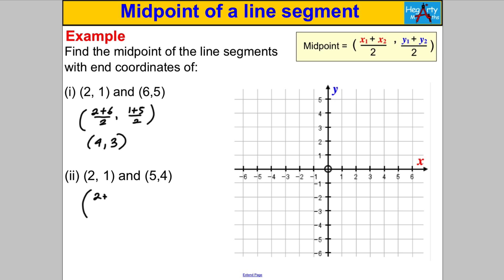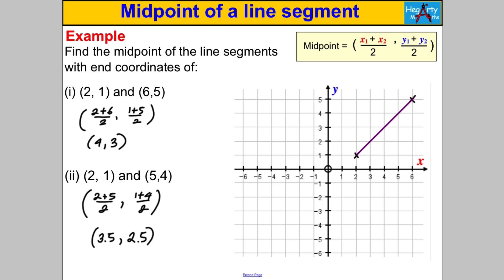What about the midpoint of (2, 1) and (5, 4)? Add the x-coordinates: 2 + 5 = 7, divided by 2 = 3.5. Add the y-coordinates: 1 + 4 = 5, divided by 2 = 2.5. The midpoint is (3.5, 2.5) — we write decimals for coordinates. Let's verify by drawing: (2, 1) and (6, 5) — drawing a line between them, (4, 3) is clearly the middle. And for (2, 1) and (5, 4), (3.5, 2.5) does look like the middle. You can always draw it if you're not sure.